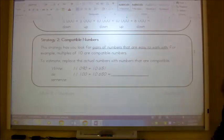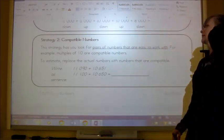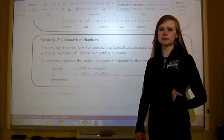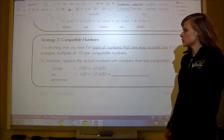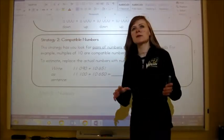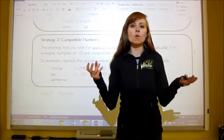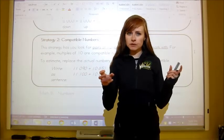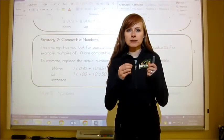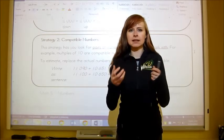The other strategy is compatible numbers. This strategy has you look for pairs of numbers that are easy to work with. For example, multiples of 10 are compatible numbers. So to estimate the actual numbers with numbers that are compatible. If I had, let's say, 23 plus 17, I know that the 3 from 23 and the 7 from 17 equal 10. So I don't necessarily have to round this number. I know it just equals 10 and then I can add it.